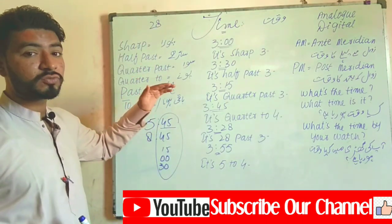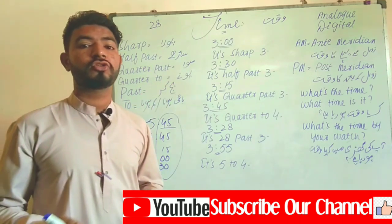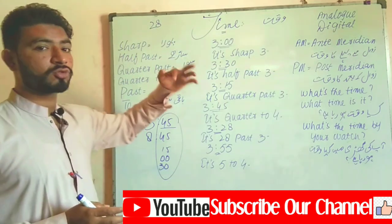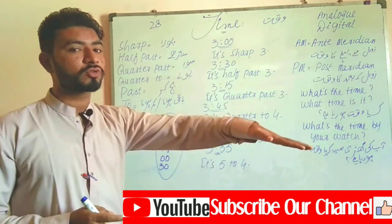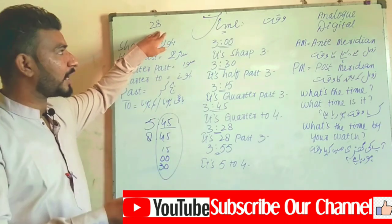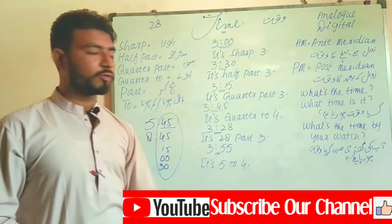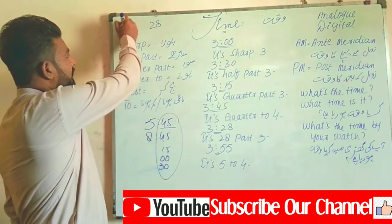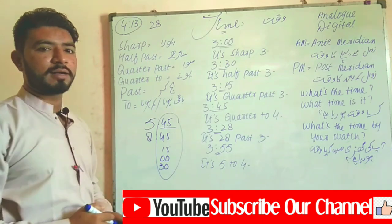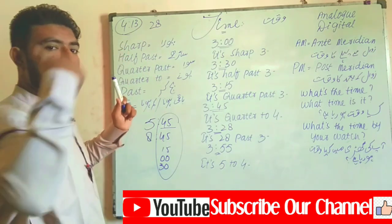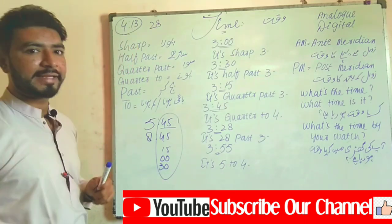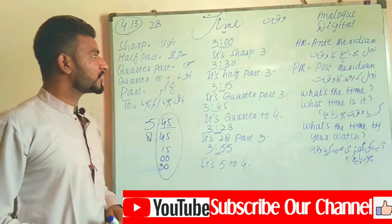In English, you do not say '328.' Instead, you say '28 past three' — the minutes come before the hour. For example, if the time is 4:13, you say '13 past four.' The minutes always take first place, and the hour comes after the minutes. So: '28 past three,' '13 past four,' and so on.